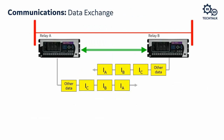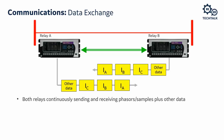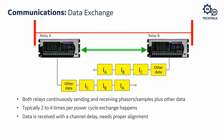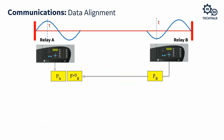What are we sending in the communication package? We send current phasors plus other data: direct transfer trip, control data to let the other relay know it is not blocked or experiencing errors, direct I/Os (eight bits) for control purposes, and other data. Relays exchange phasors or samples plus other data continuously, typically two to four times per power cycle. However data comes with channel delay and needs proper alignment.